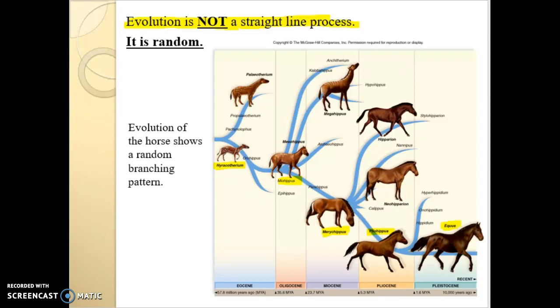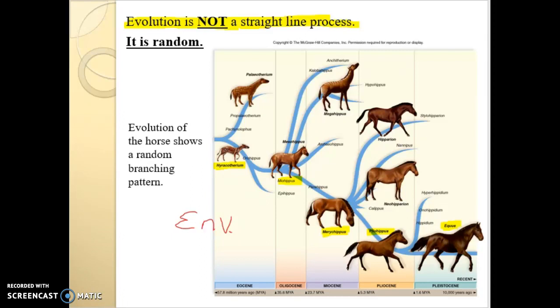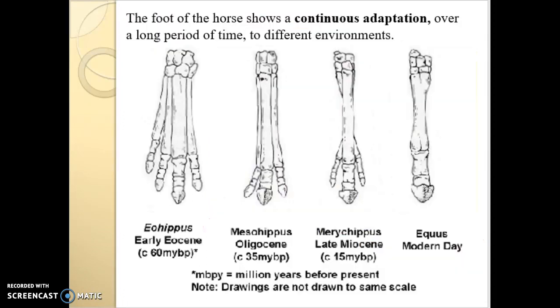When looking at this evolutionary process, we have to consider the environment it occurs in. Hyracotherium lived in a very dense, jungle-like environment. As the environment changed, being bigger became more adaptable and fit. You continue to evolve in a certain direction when your environment keeps pushing in that direction. Looking at the feet of the horses, they went from four toes to three, to one primary with two reduced toes, down to essentially one toe — the other toes all fused together. This shows a process of continuous adaptation and evolution over a long period of time. We'll keep looking at lines of evidence in our next lecture.